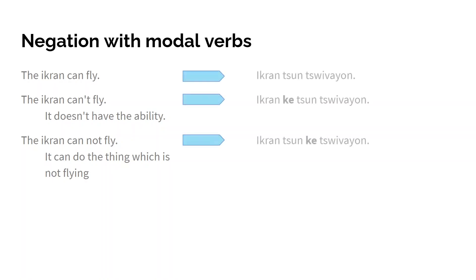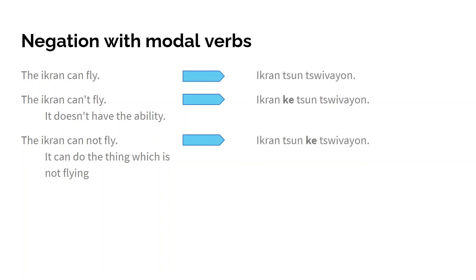In Na'vi this is built with an infix, so 'zwayon' becomes 'zwayon' with the infix. The base sentence 'the ikran can fly' would be 'ikran tsun zwayon.' In English we always put the negation in front like 'it cannot fly,' but this is actually ambiguous — it can mean the ikran doesn't have the ability to fly, so 'can' is negated. Or it could mean it can do the thing which is not flying, so the flying is negated.